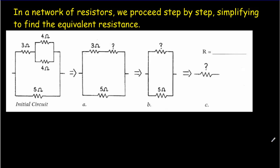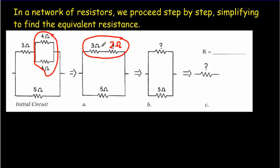If we have a network of resistors, we can proceed step by step looking for places where two or three resistors are directly in parallel or directly in series. For instance, in this network, these two 4-ohm resistors are directly in parallel. We can replace a 4 and 4 in parallel — since they're equivalent, we just divide by two, giving 2 ohms. Now the 2 and the 3 are directly in series, so we replace them to get 5 ohms. And now we have two equivalent parallel resistors, so we divide by two again and get a grand total resistance of 2.5 ohms.